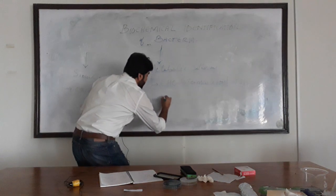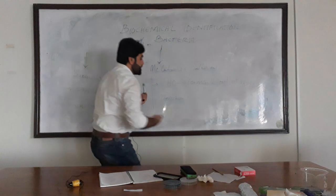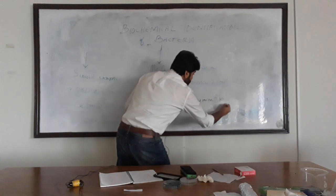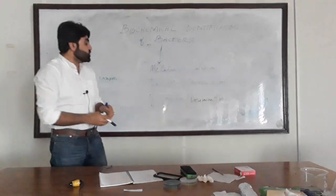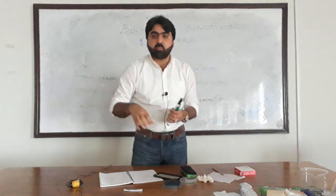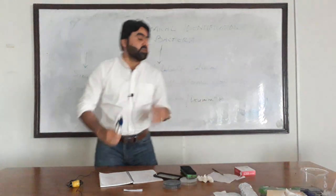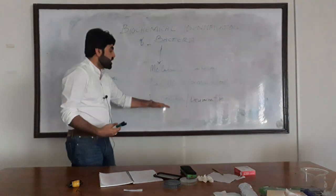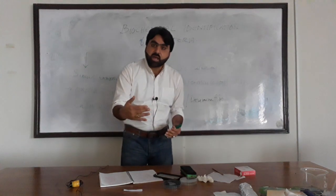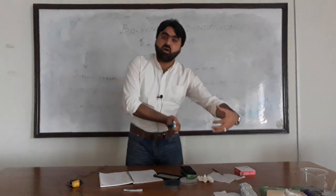Secondly, under metabolic pathways, we can use decarboxylation or deamination of amino acids. Different bacteria have the ability to decarboxylate or deaminate: decarboxylation is the removal of a carboxyl group from an amino acid, and deamination is the removal of an amino group from the amino acid. We can use different amino acids under decarboxylation or deamination reactions for the identification of bacteria.